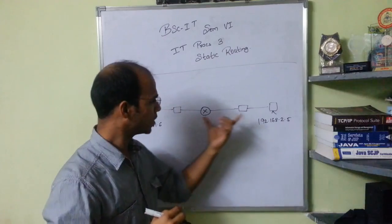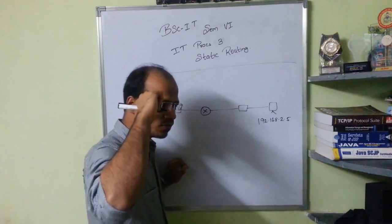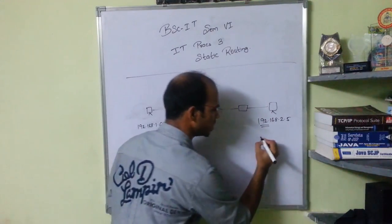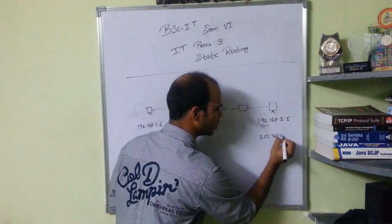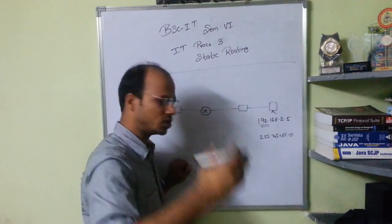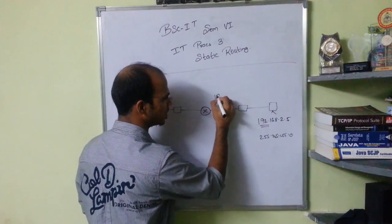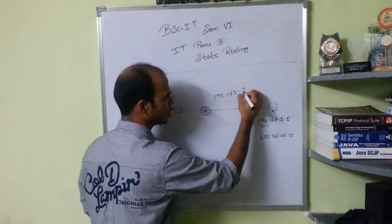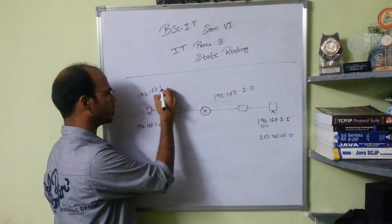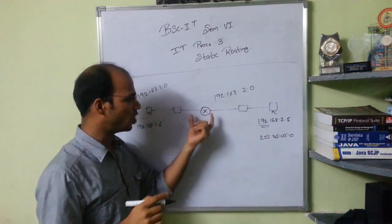A router connects two different networks. For the network with IP 192.168.2.5, the network address is 192.168.2.0 — since this is Class C with mask 255.255.255.0, multiplying gives zeros for the host portion. Similarly, the other network address is 192.168.1.0. So these are two different networks. To connect them, first you configure your machines, then you configure your router.